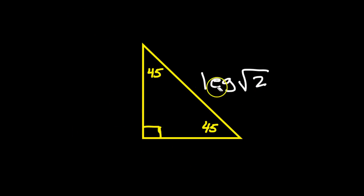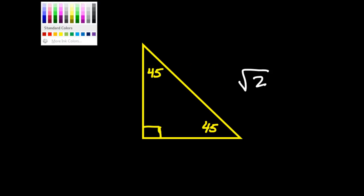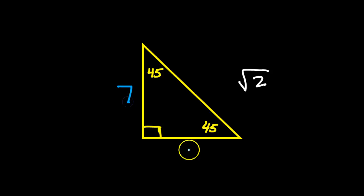That means that if the legs were, let's say, seven, then I would have seven, seven, and then seven radical two. All right.